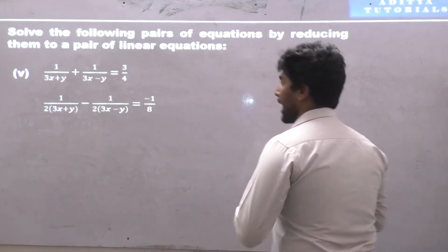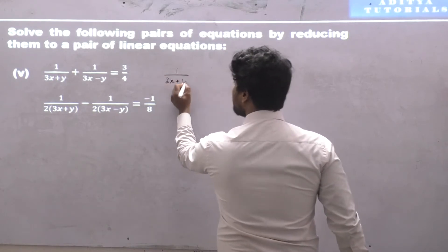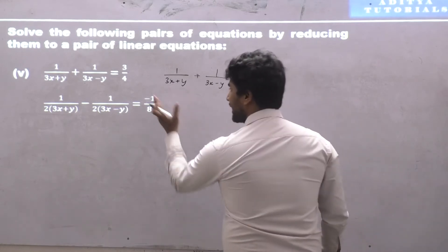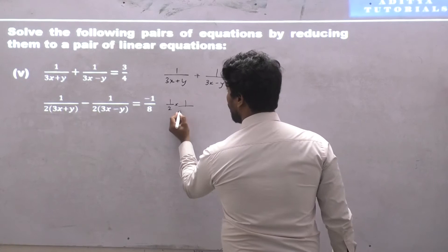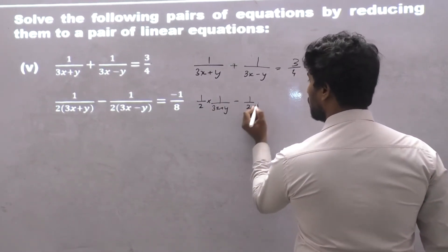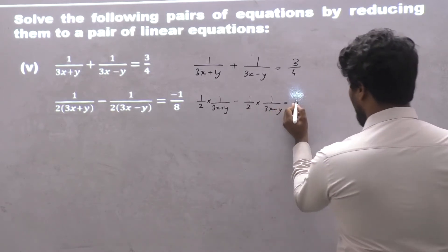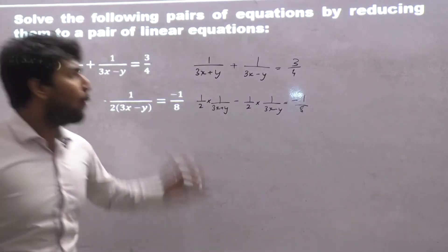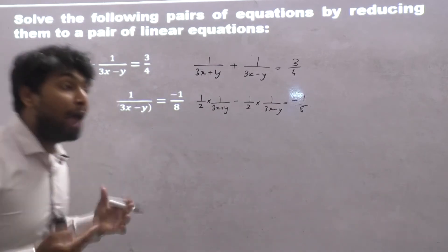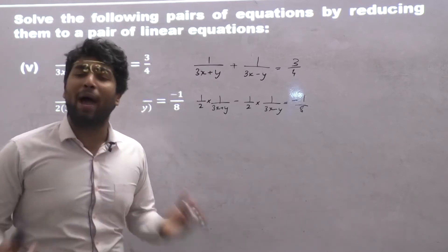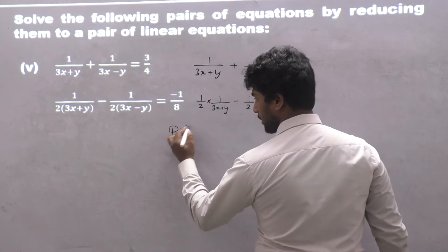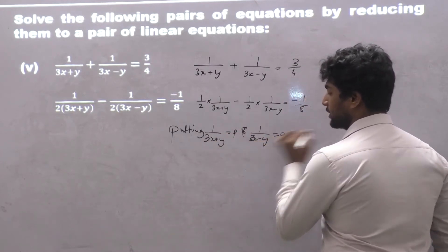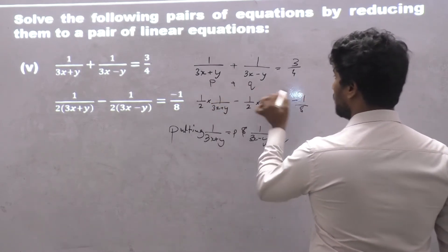I can rewrite these equations by observing the repeating pattern: the first term is 1 upon (3x + y) and the second term is 1 upon (3x − y). So I will assume 1 upon (3x + y) as p and 1 upon (3x − y) as q. Substituting, I get: p plus q is equal to 3 upon 4.